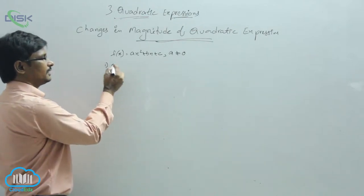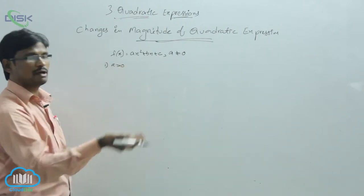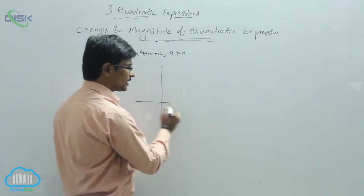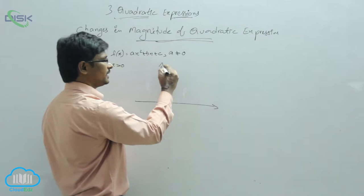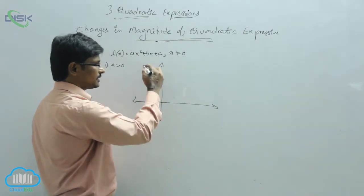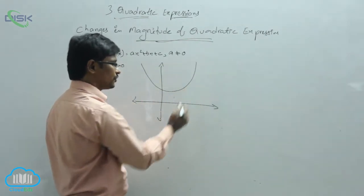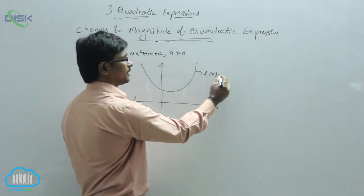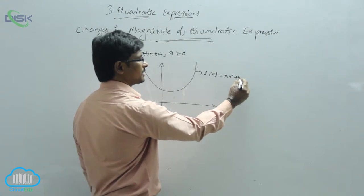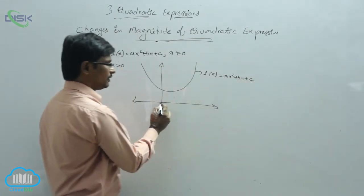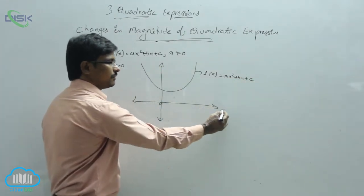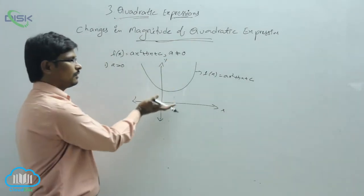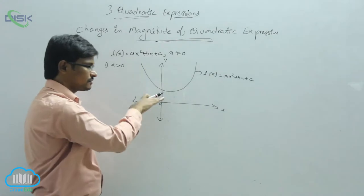First case: if a is greater than 0, what will be the changes? If a is greater than 0, then the graph of ax² + bx + c will open upward, towards the positive y-axis. We know that the right side represents positive x-values, the left side represents negative x-values, and upward is the positive direction.